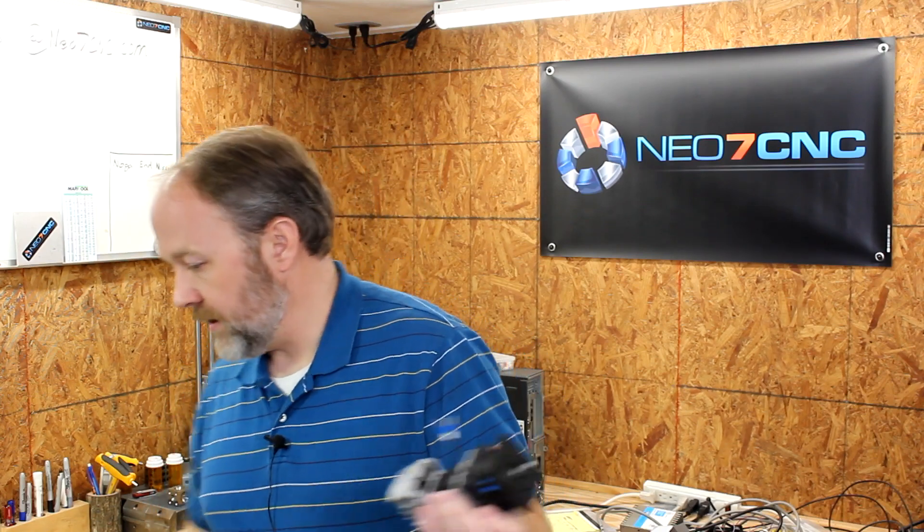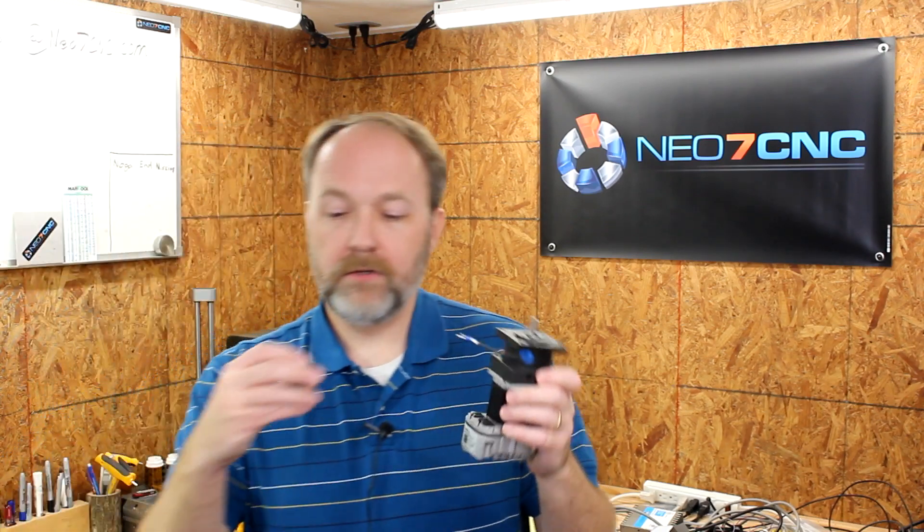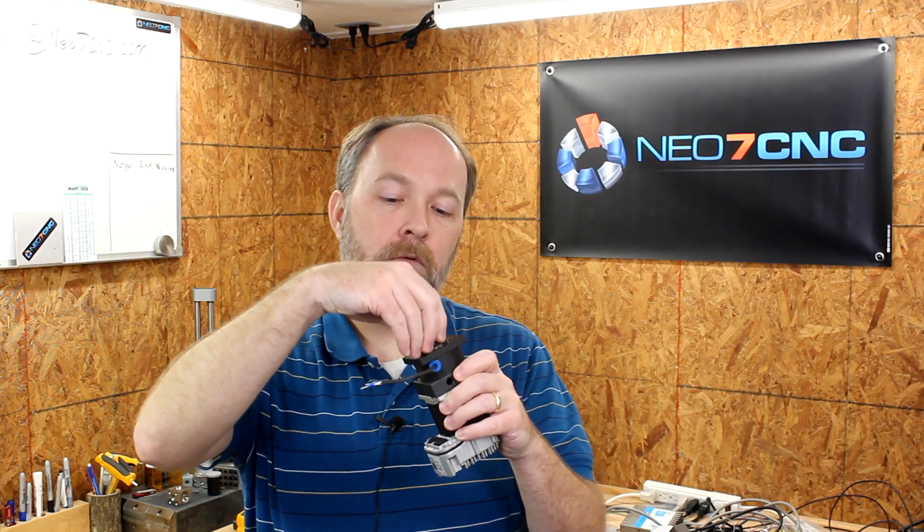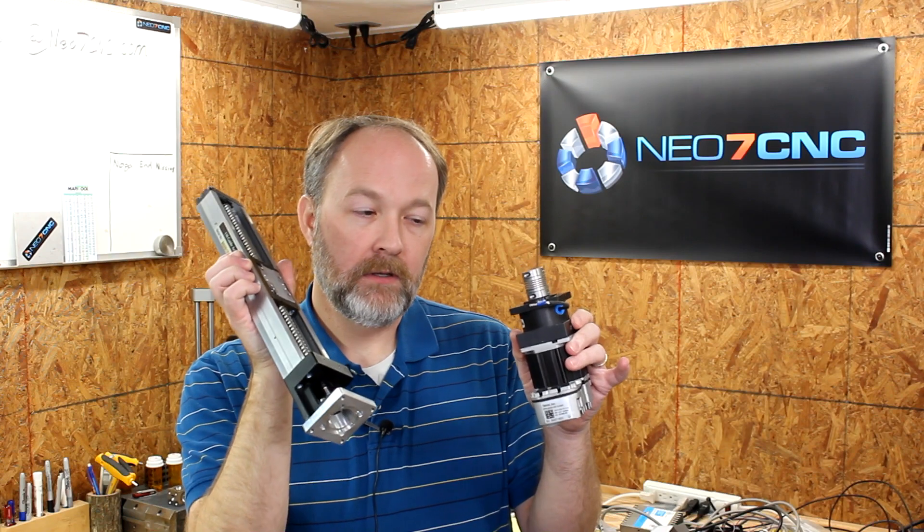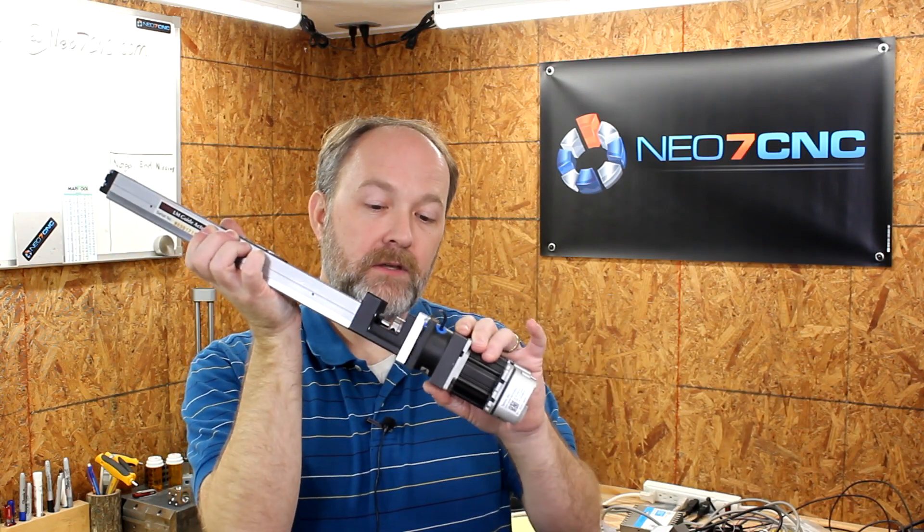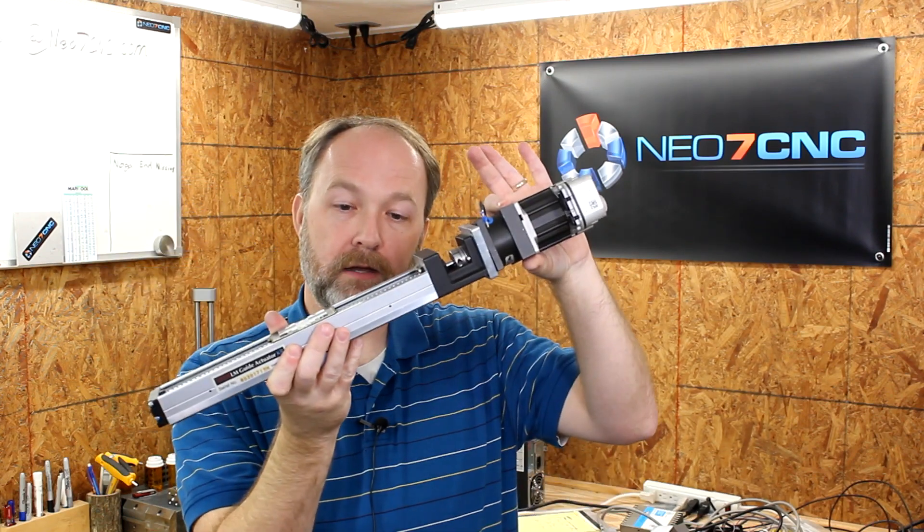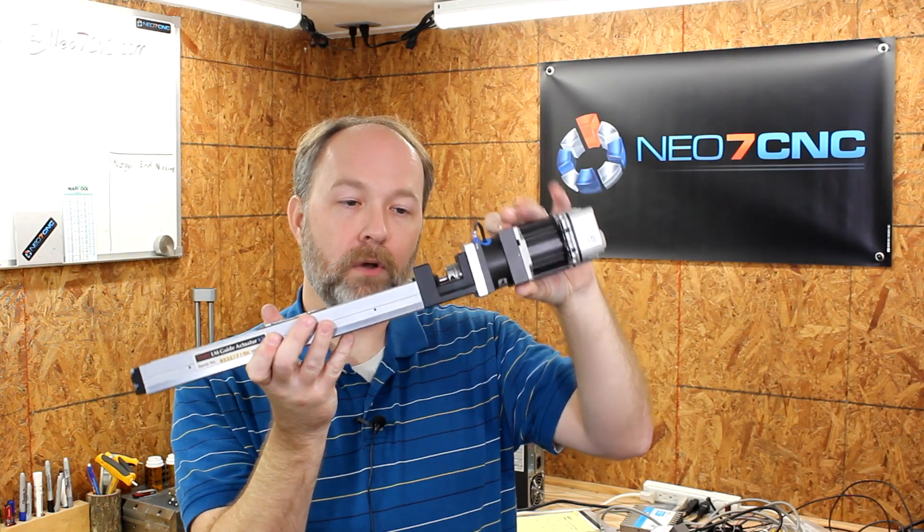And then I have a coupling that I will use to connect it to the linear actuator that we'll kind of test this with. So all of these things go together like so and you have a linear axis with a brake incorporated.